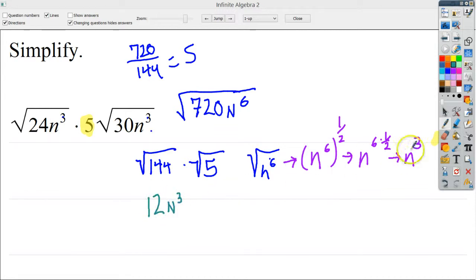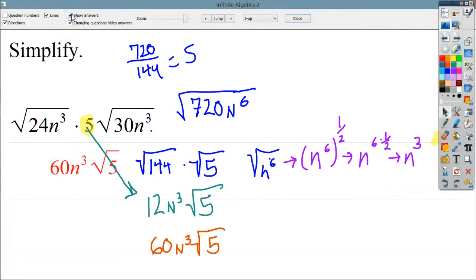Fortunately, I highlighted this, because I have to remember, now that that's outside, I can multiply those two together. I get five times 12, which is 60 N to the third times the square root of five. I'll check to make sure that's right. And it is. That's a good thing. And that's it, really. Combine them together, do a little bit of reorganization, and then, you know, it's fun.